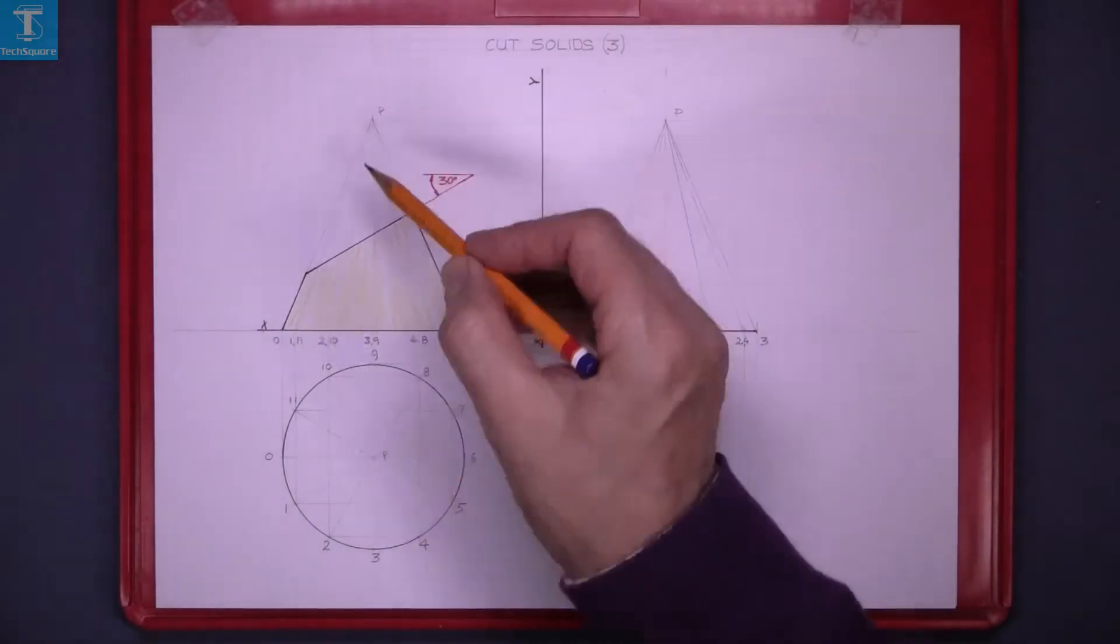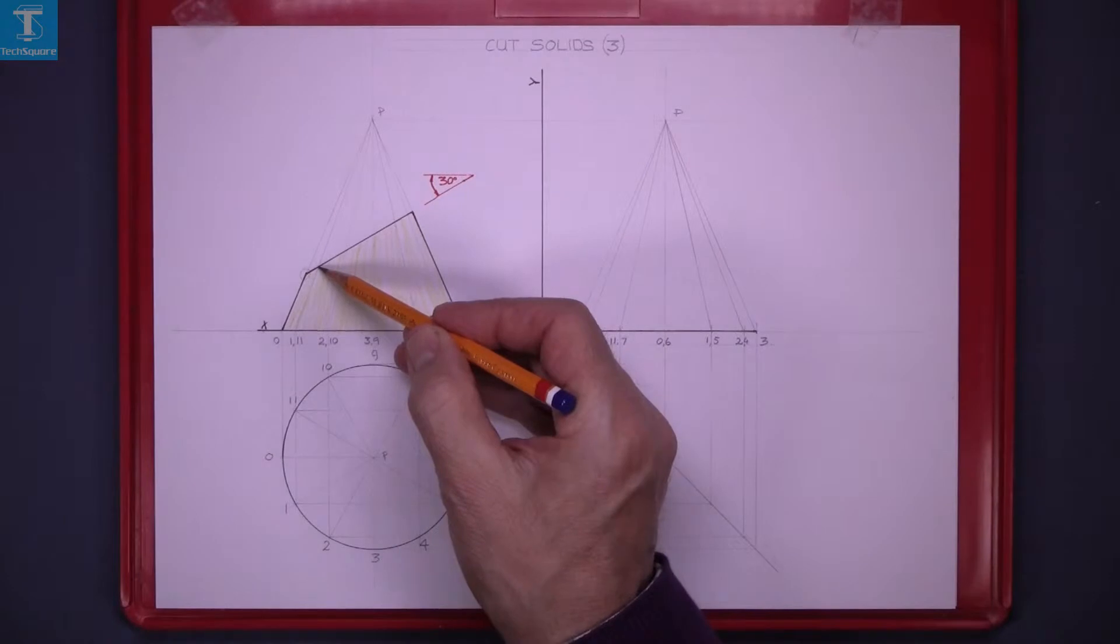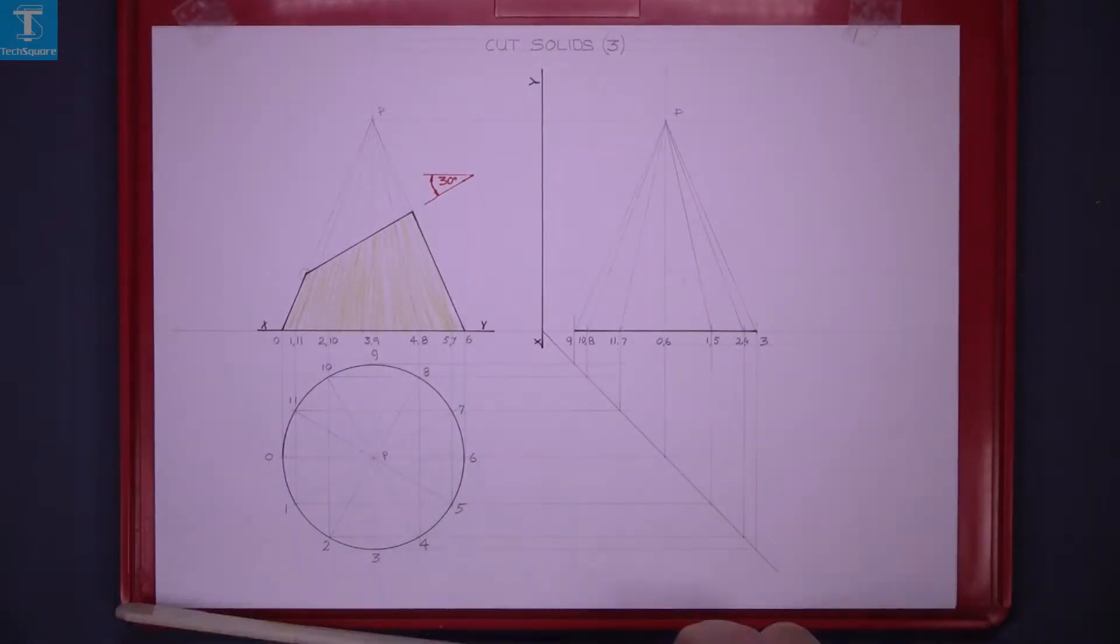0P in plan and in elevation, and that point is where it's cut, so bring that point down to the plan and bring all these other points down as well.